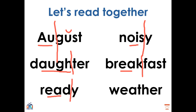Let's take a look at another word with EA here — it's still saying EH. I also see a digraph in here as well — the TH digraph. And we can split it between its syllables. So let's sound it out. Well done.